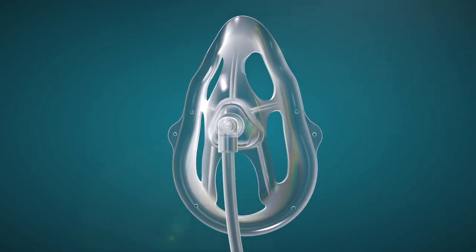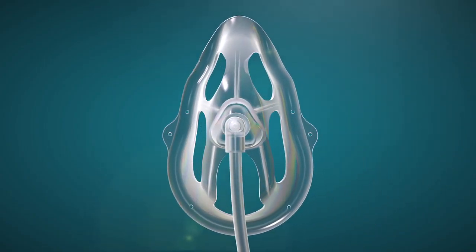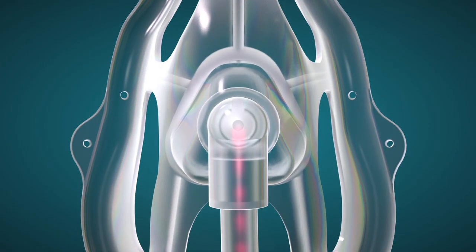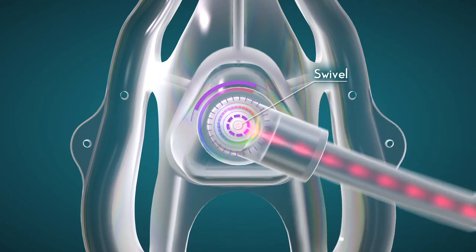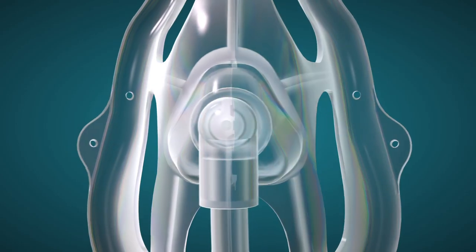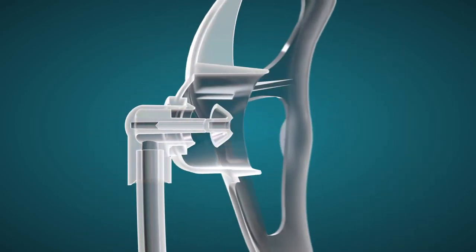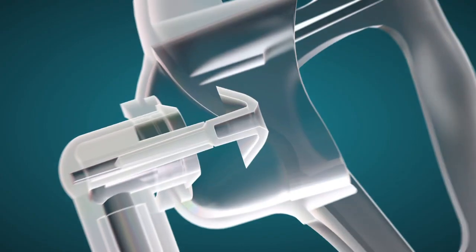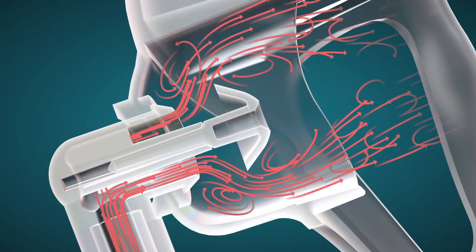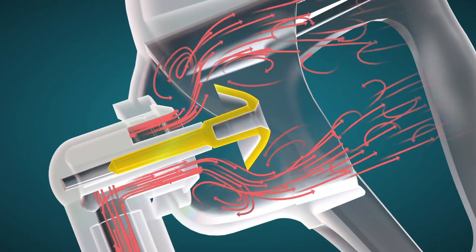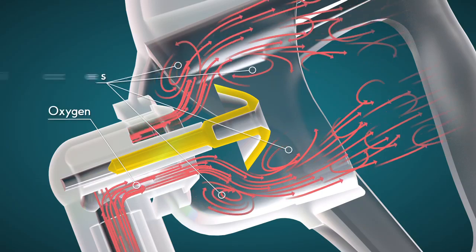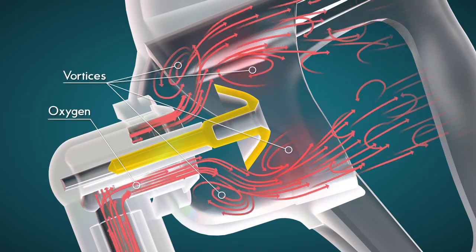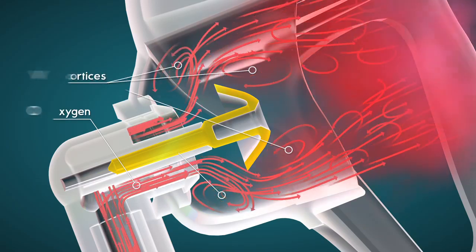Let's take a closer look at how this system works. OxyMask enters the system through a right-angled swivel at the front of the mask. The mushroom-shaped pin redirects the flow of oxygen, forming an organized pattern of vortices and a cloud of concentrated oxygen molecules.